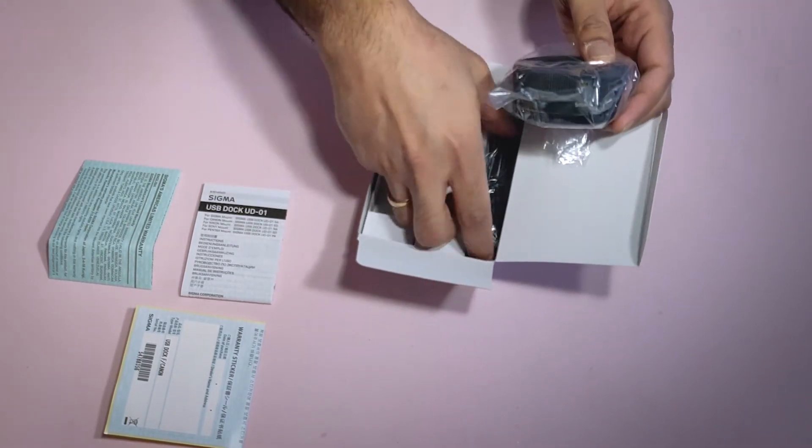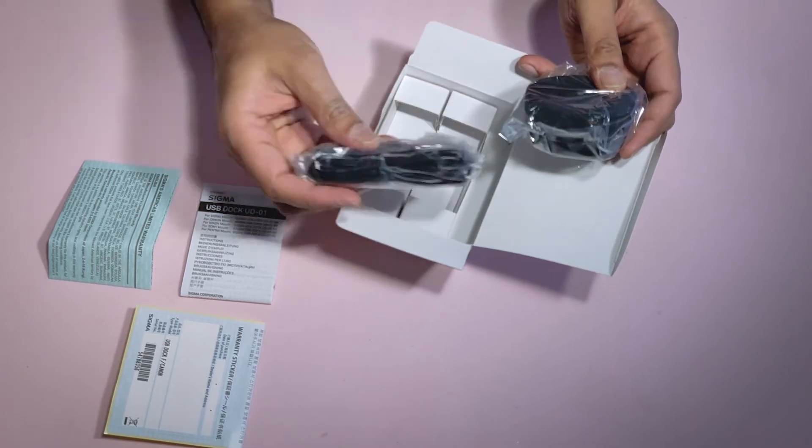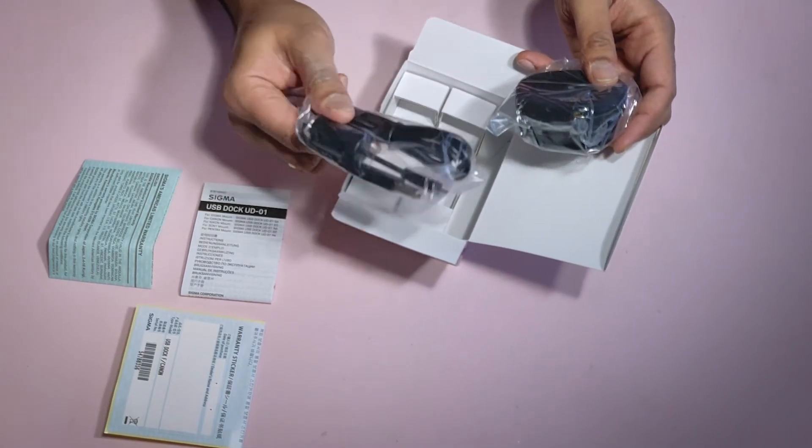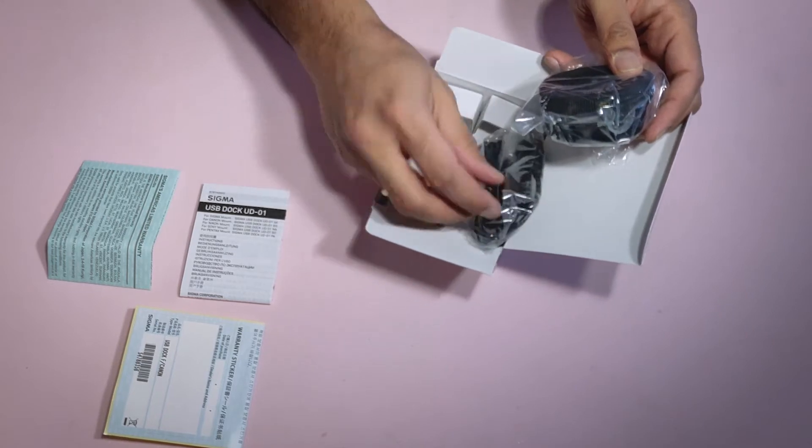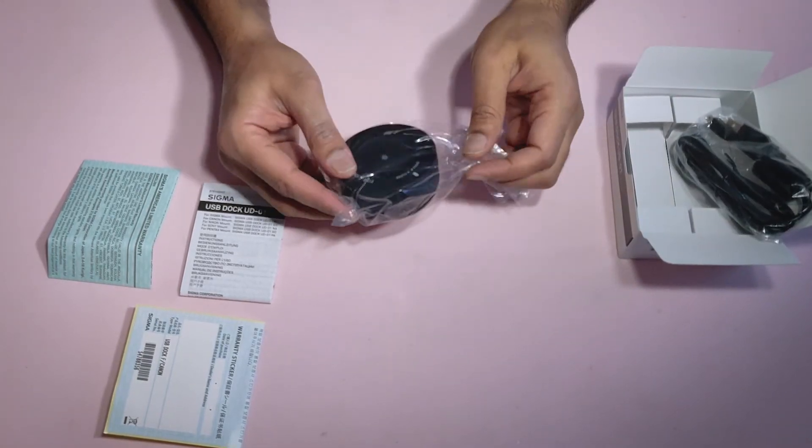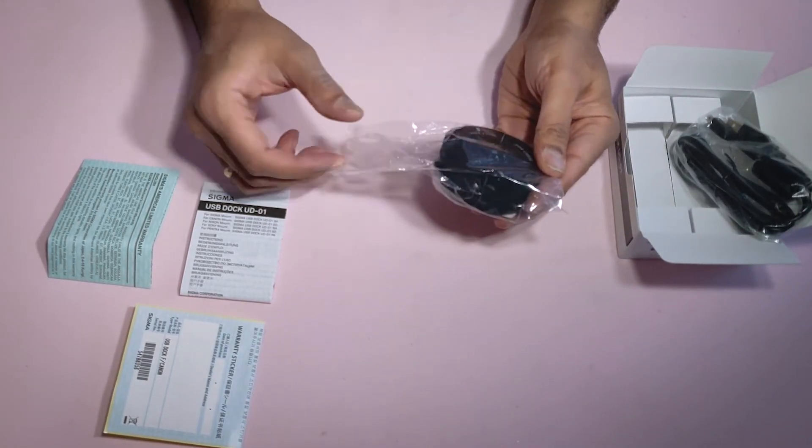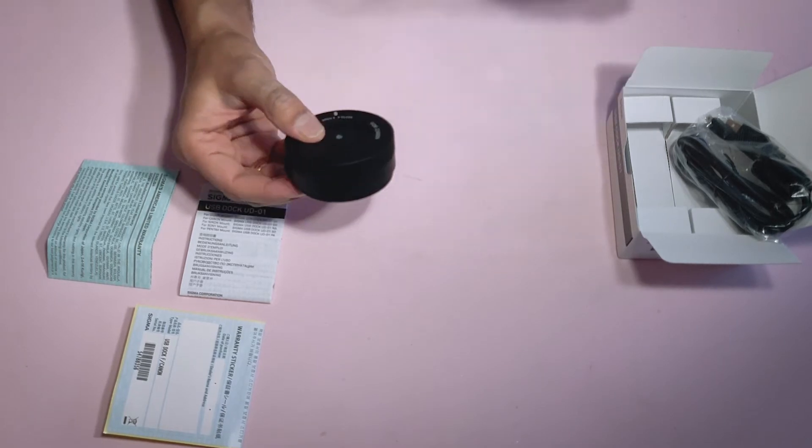This USB dock is basically used to calibrate and update the lens firmware. In order to do that, you need to download the Sigma Optimization Pro software from the website. I will link the website in the description below.